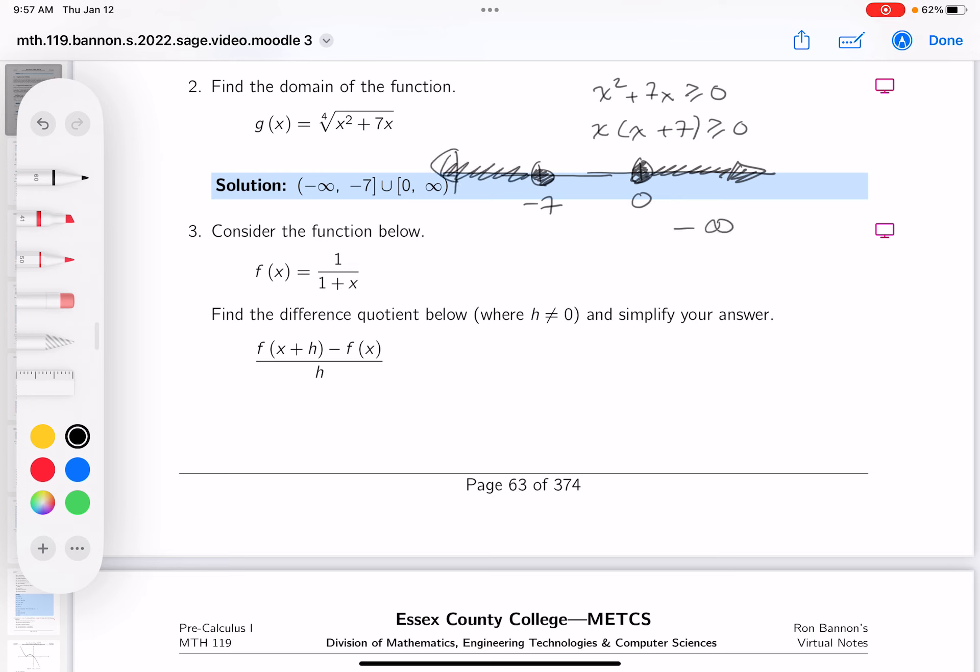So what do you have here? Minus infinity up to minus seven. Minus infinity up to infinity, all right?